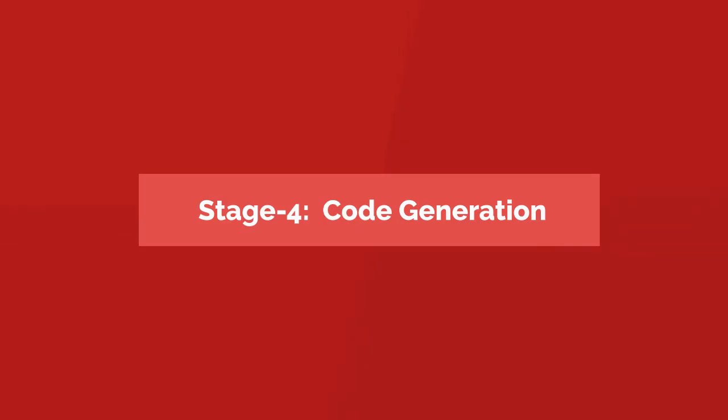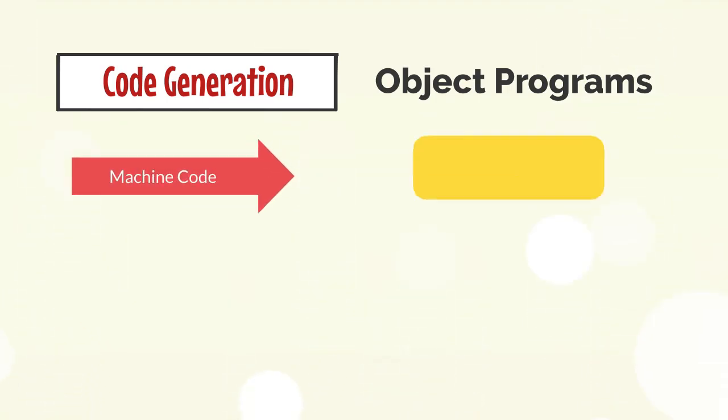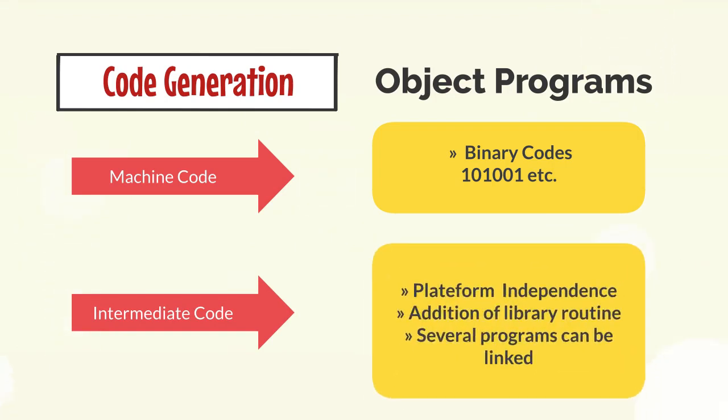Stage 4: Code generation. The code generation stage produces an object program to perform the task defined in the source code. This object program is either in machine code that can be executed by the CPU, or in an intermediate form that is converted to machine code when the program is loaded. The intermediate code option allows greater flexibility.